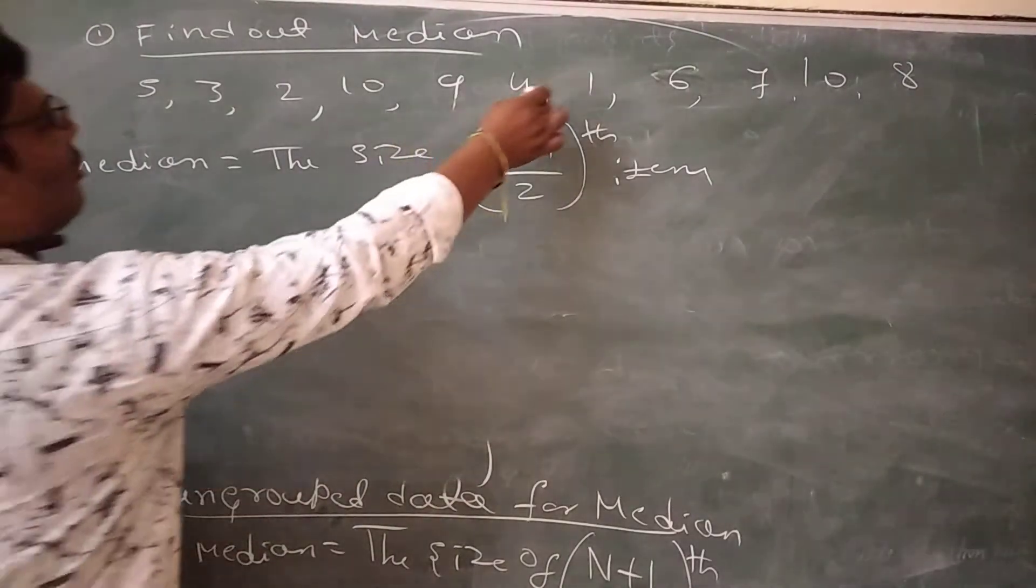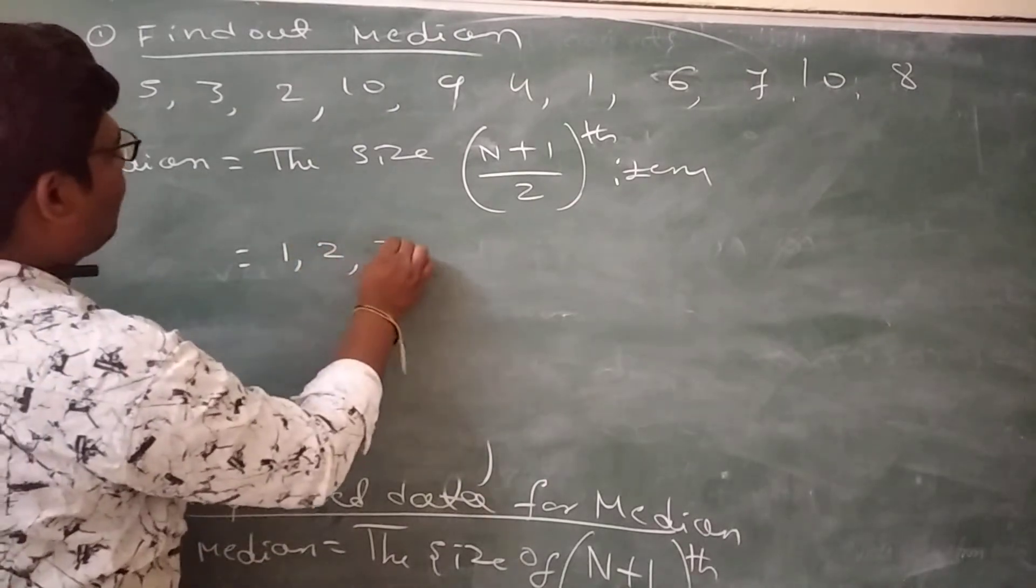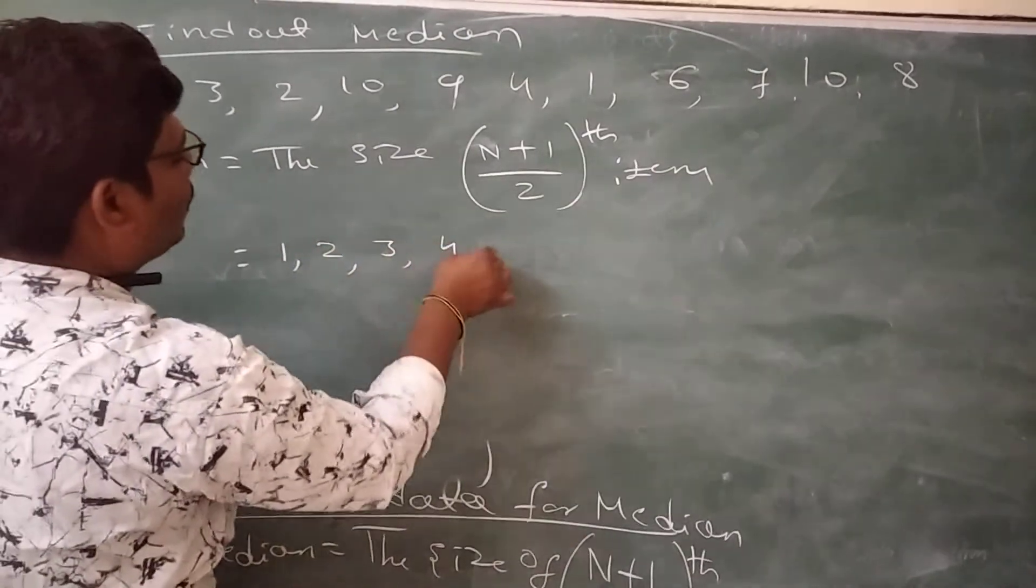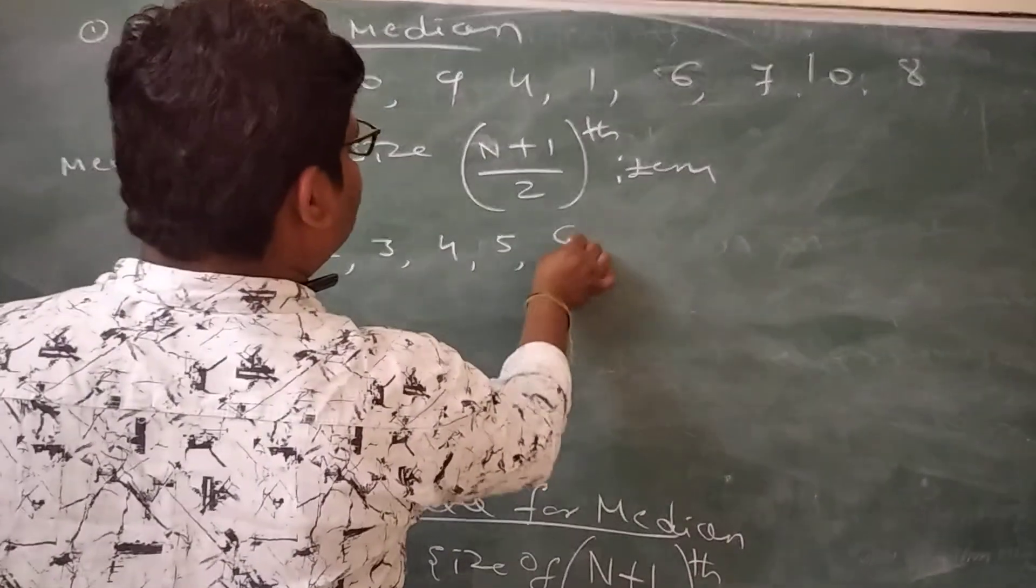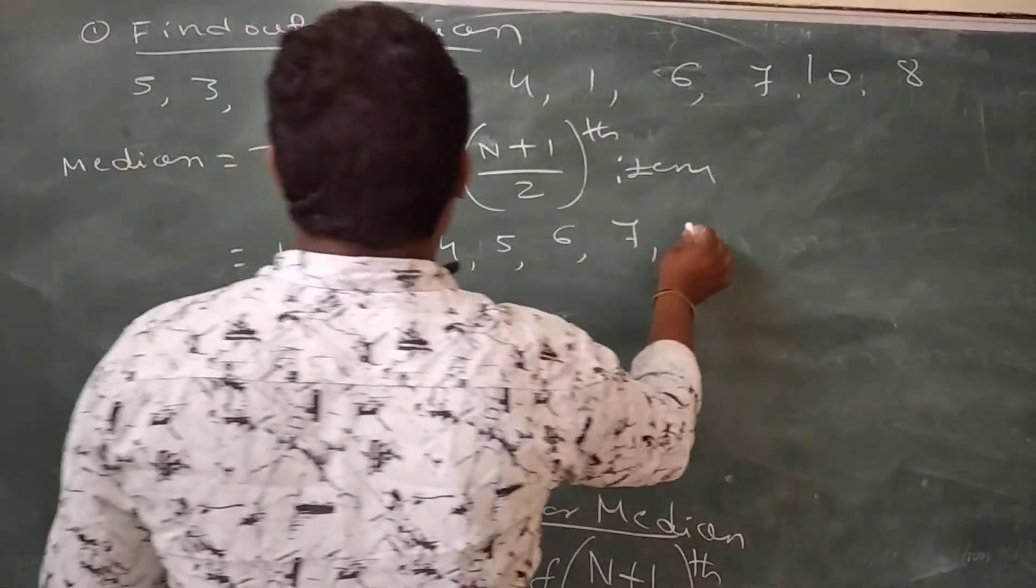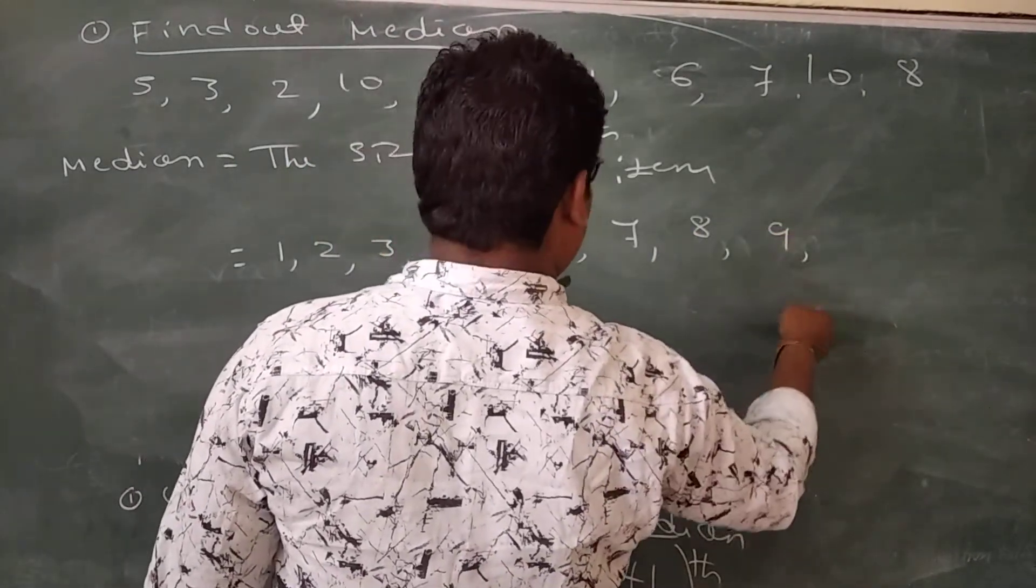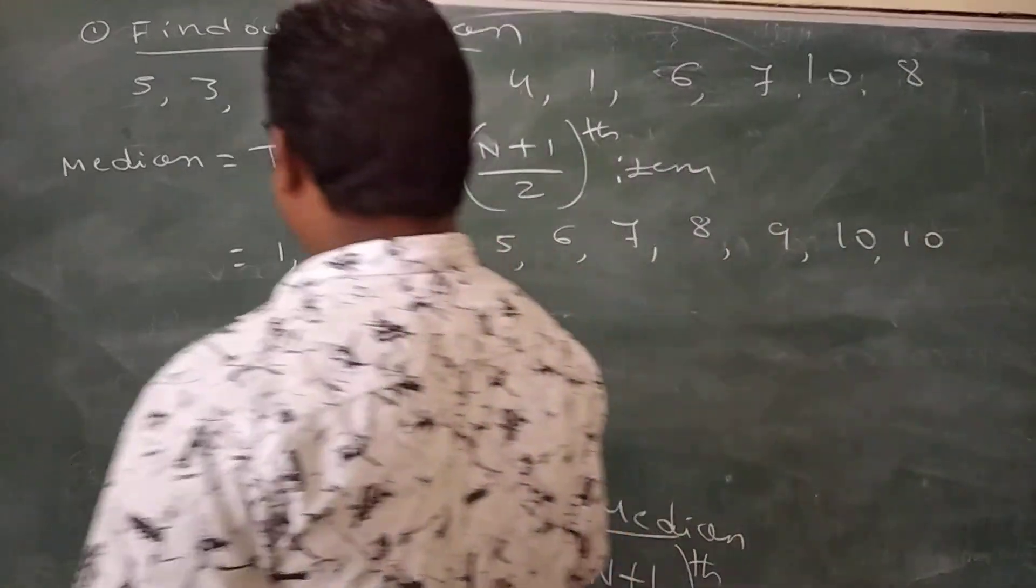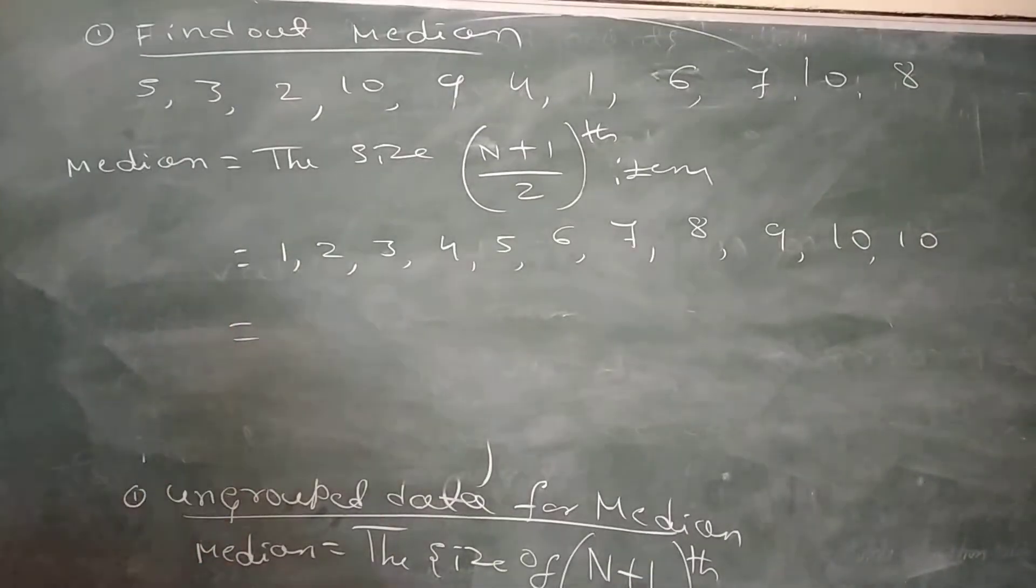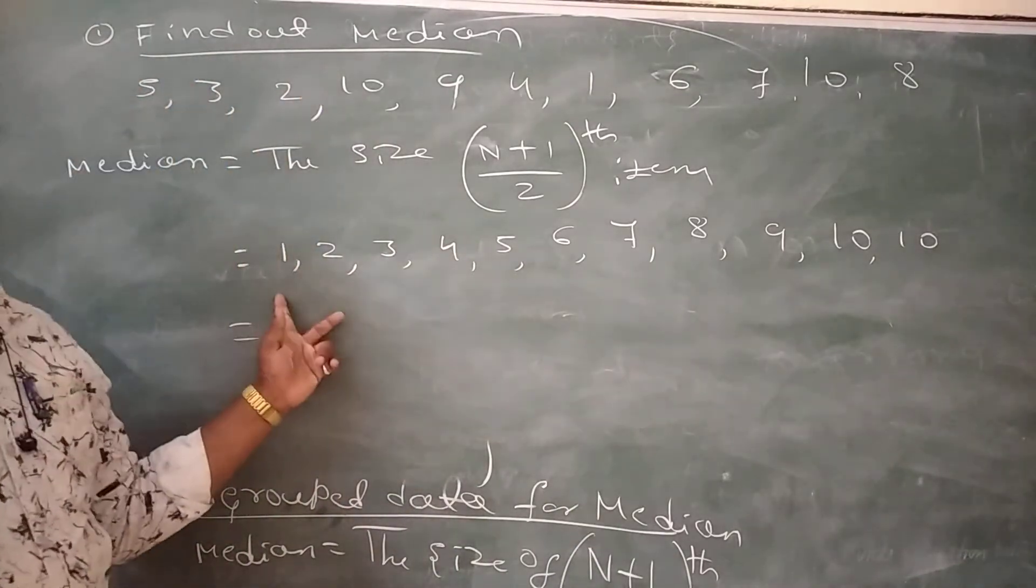The ascending order is 1, 2, 3, 4, 5, 6, 7, 8, 9, 10, 10. Therefore, the descending order converted into ascending order of the data.